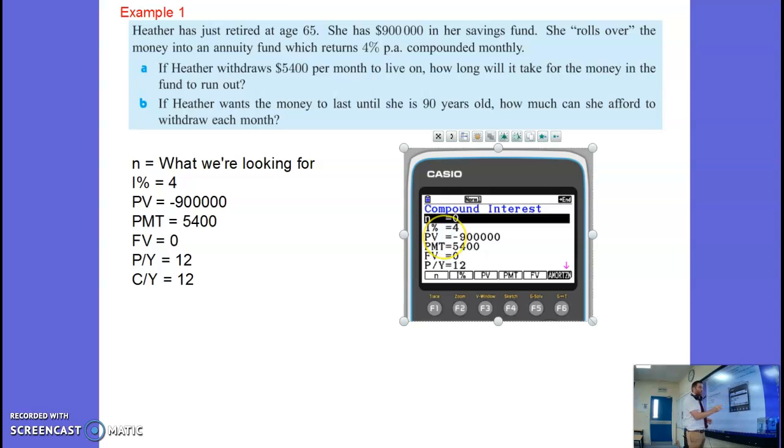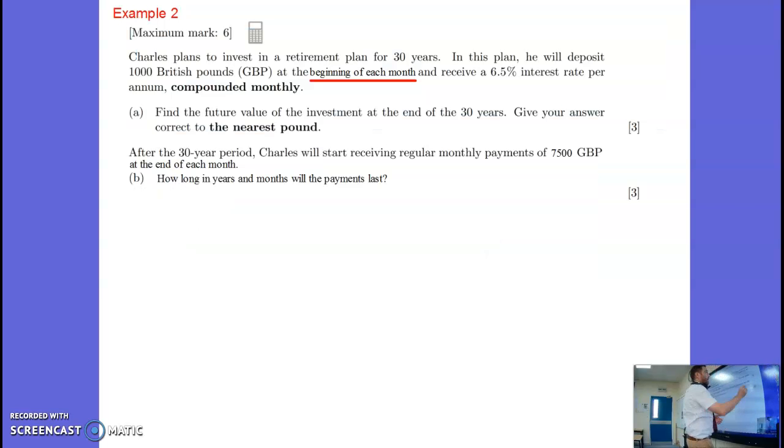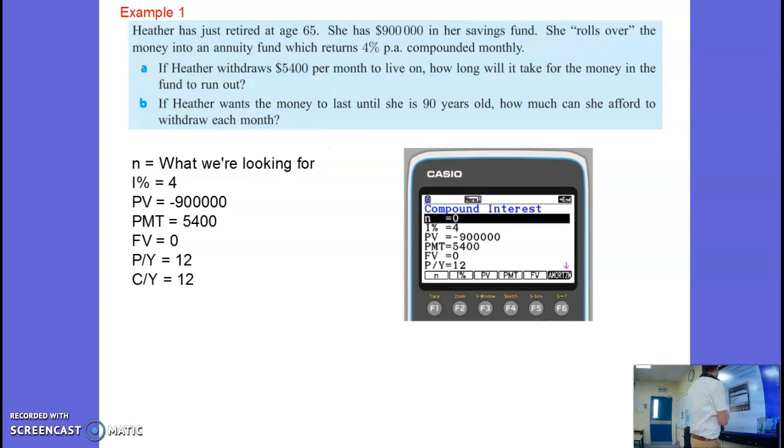And when I do that you should find that you have it looking like that. Just be careful there. Present value is negative. It's gone from the person currently in the bank account. Can't touch it. The payment, that's what's going in the pocket.